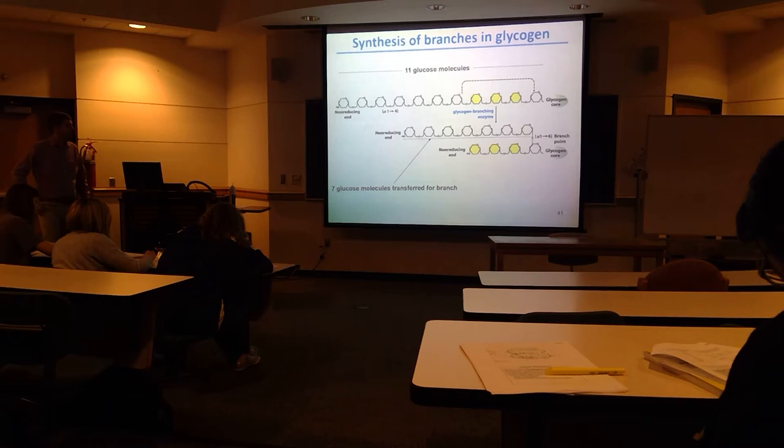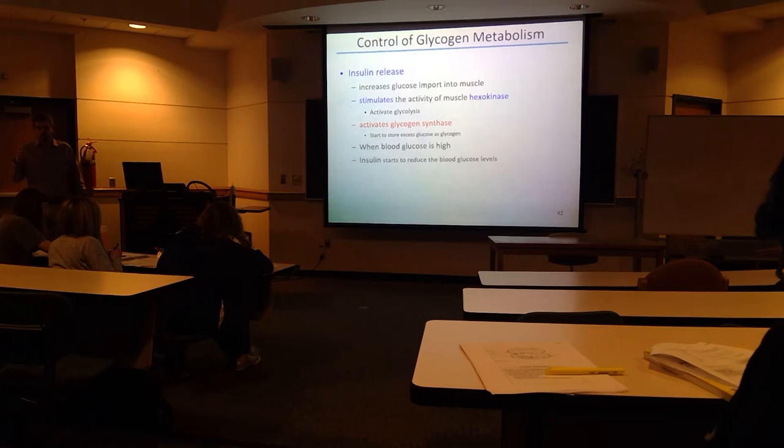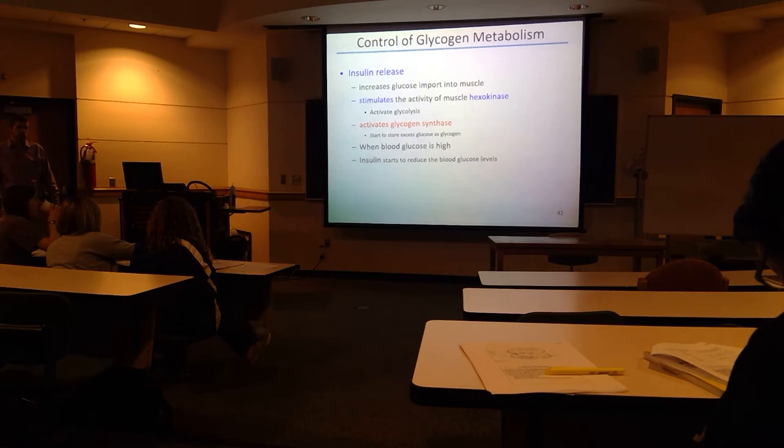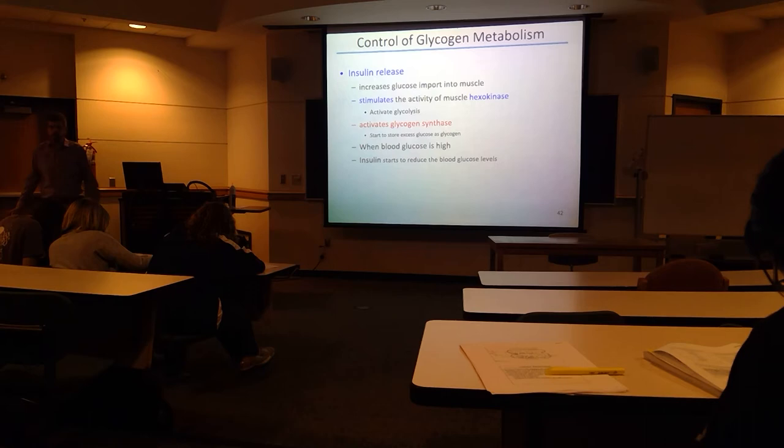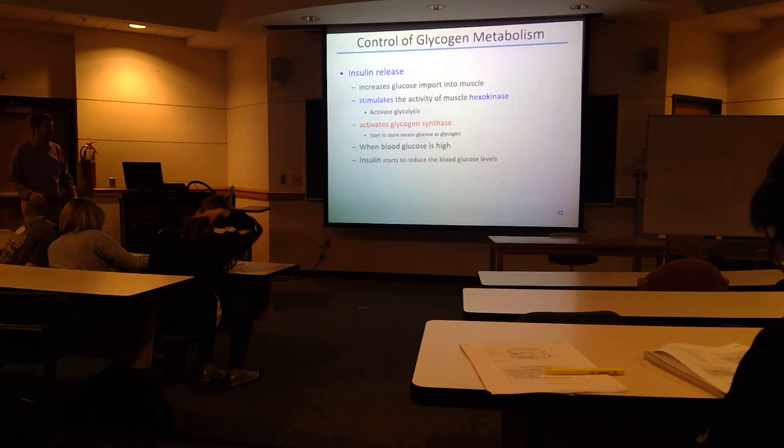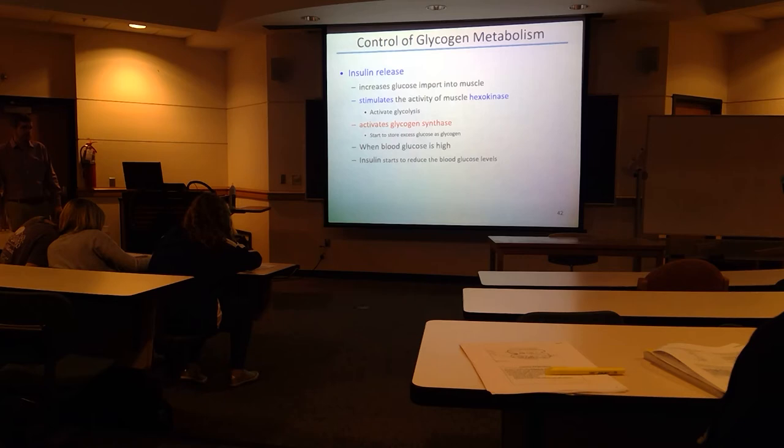That's roughly how glycogen synthesis works. You don't need to draw all the structures, but you should know the names of everything involved and remember the linkages for glycogen: alpha-1,4 in the linear parts and alpha-1,6 at the branch points.